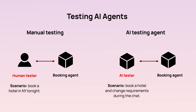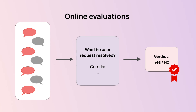The third idea is to test the complete interaction. You can do this manually by going through scenarios, but you can also do it programmatically by implementing an agent that plays the role of a user. For example, simulate a user booking a hotel room with certain requirements, then changing those requirements halfway through, and test that your agent adjusts correctly. For online evaluations, you can use the LLM-as-a-judge approach at the conversation level — passing the full transcript and asking things like: did the user express frustration? Did the agent communicate politely? Was the user's task resolved by the end?